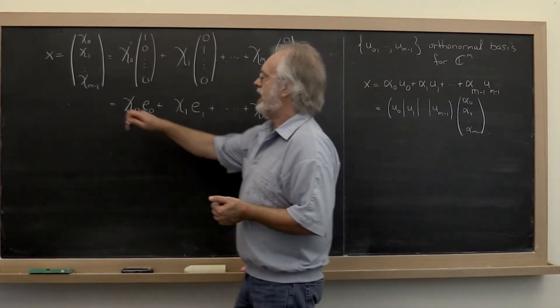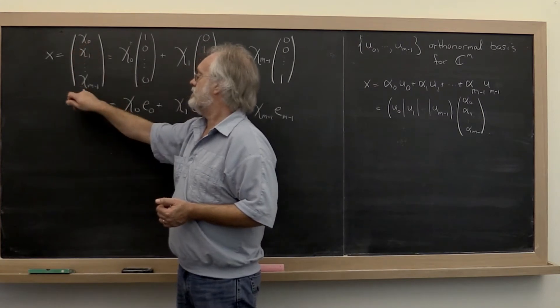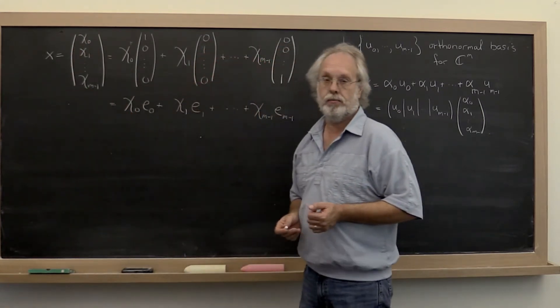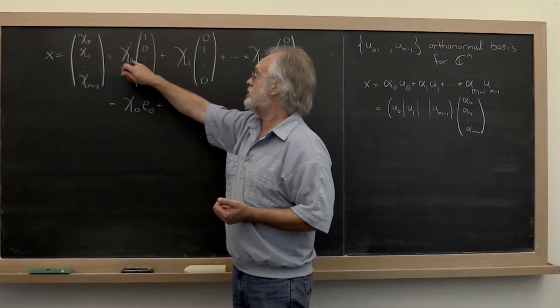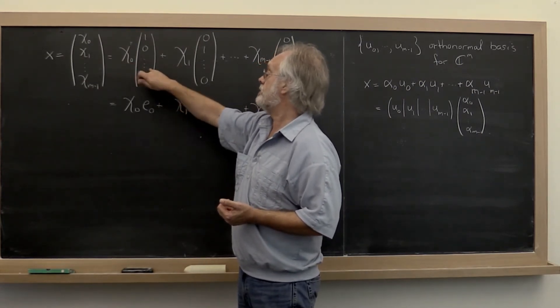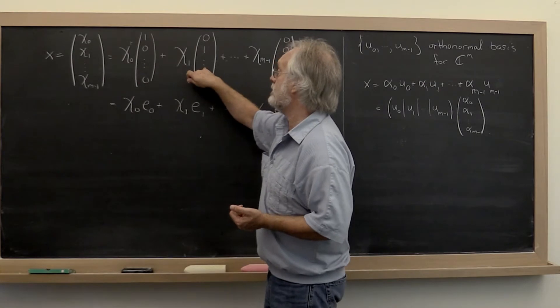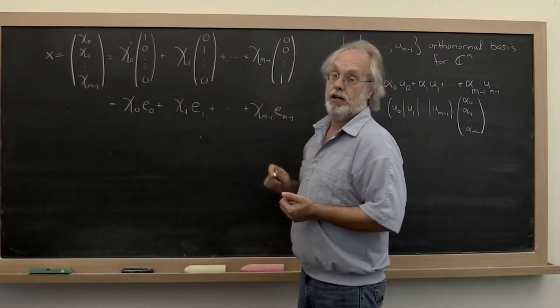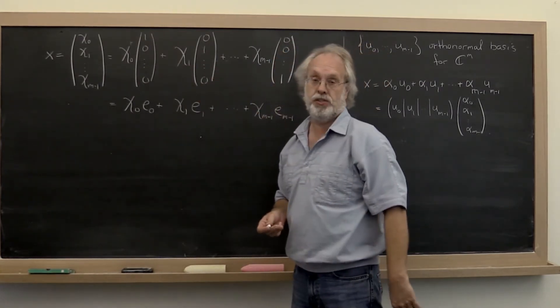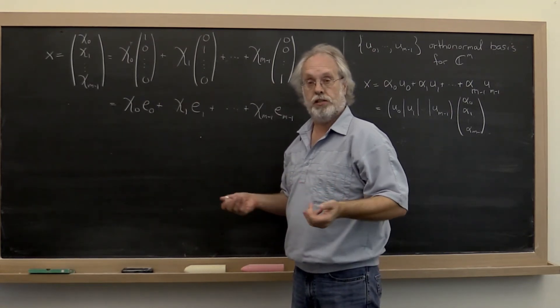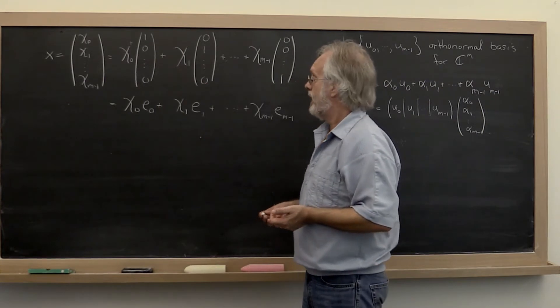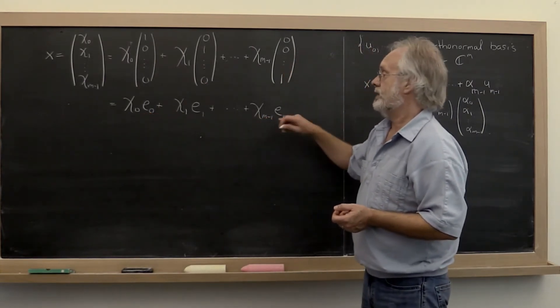Well, normally we think of x as a vector chi0 through chi m-1. And what that really captures is that you're taking chi0 times the first standard basis vector plus chi1 times the second standard basis vector and so forth. In other words, you're taking a linear combination of the standard basis vectors which form a basis for Cm. And this is another way of writing the same thing.